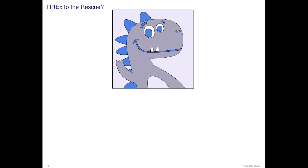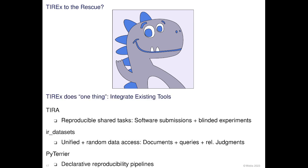We now propose the information retrieval platform TREX to address all three of those problems. What TREX does is integrate three existing tools: TIRA, which is research software for reproducible shared tasks that works by enabling software submissions and blinded experiments; IR datasets, which provides unified and random access to documents, queries, and relevance judgments; and PyTerrier, for declarative reproducibility pipelines to increase the benefits gained from shared tasks after they are done.